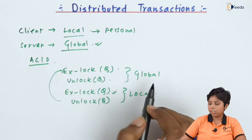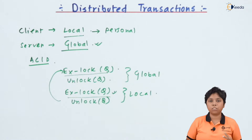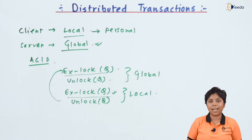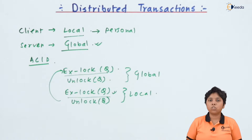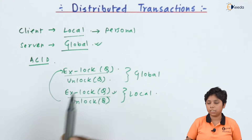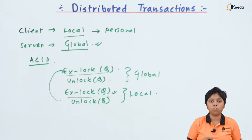A global exclusive lock and a local exclusive lock can result in a deadlock situation — where the global transaction or server side is waiting for the local client to release the data item, while the local database update needs the server to perform some update to continue. To avoid this, the global transaction has preemption priority so it can acquire the exclusive lock from the local database and obtain its own exclusive lock in global mode.